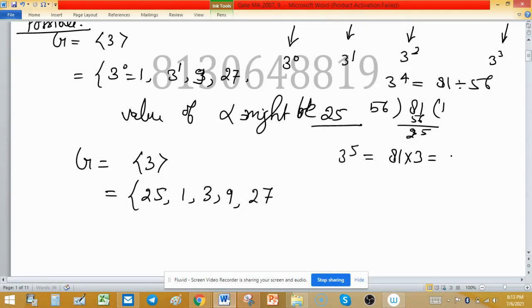That's 243. Now 243 divided by 56: 56×4 is 224. Subtract this and we get 19. So the remaining element 19 is also generated by 3.